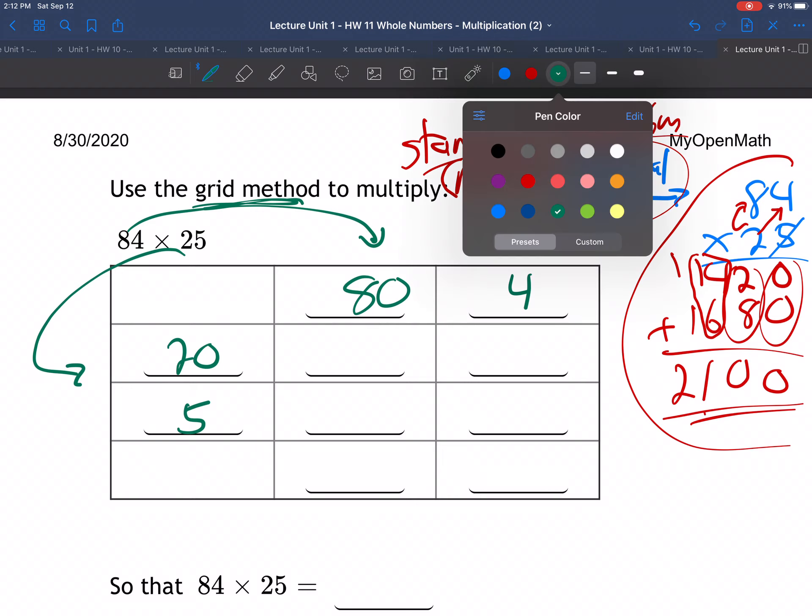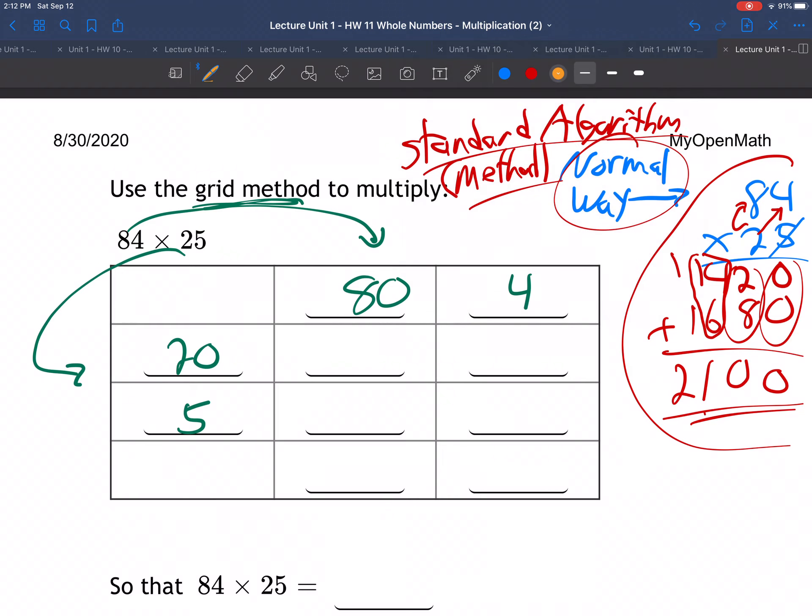Okay, now what we're going to do, I bet you can guess, we're going to multiply the numbers. In other words, 20 times 80. So right here, 20 times 80, you can use your calculator. You can use your calculator on everything, the homework, the tests, everything. We're going to say 1600.